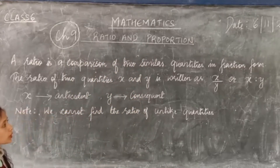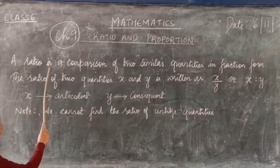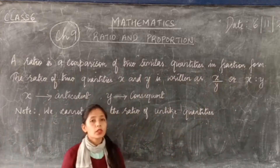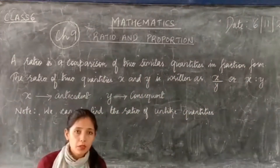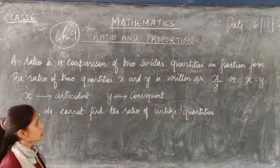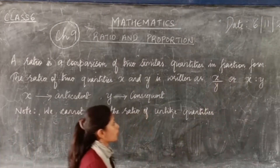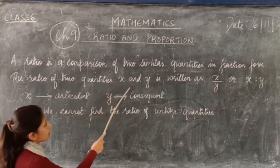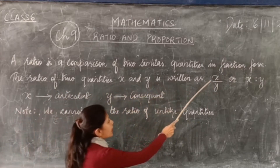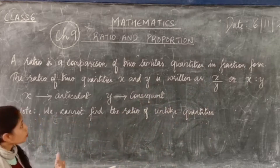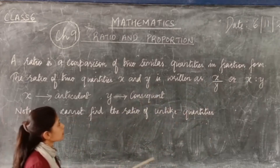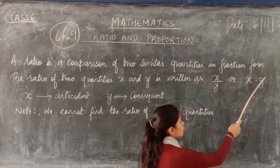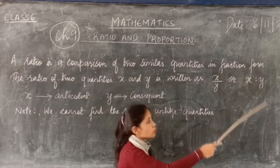First we have to learn what is ratio. A ratio is a comparison of two similar quantities in fraction form. In ratio, we always have to express two similar quantities in fraction form. The ratio of two quantities x and y is written as x is to y, or in fractional form as x over y.